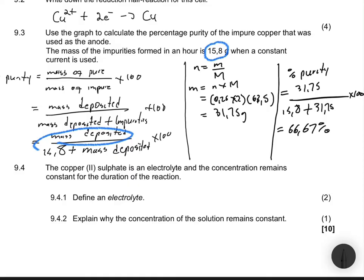Question 9.4.2 asks why the concentration of the solution remains constant. The concentration remains constant because the rate of oxidation is equal to the rate of reduction — the rate of losing electrons equals the rate of gaining electrons — and as a consequence the concentration of the solution remains the same.